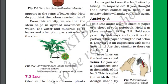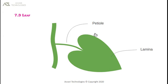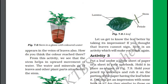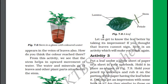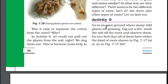The broad green part of the leaf is called a lamina. To recap: the stem of a plant holds the leaf via the petiole, and the broad part of the leaf is called lamina. Now let us see Activity Seven.